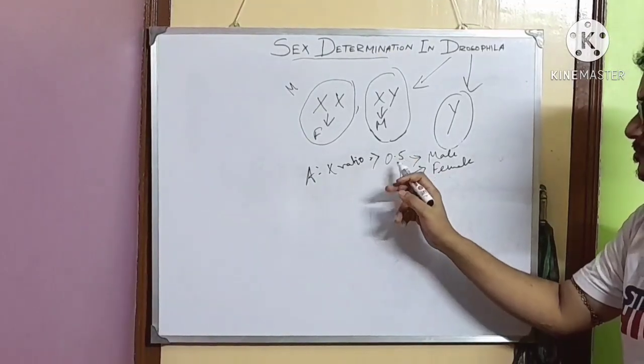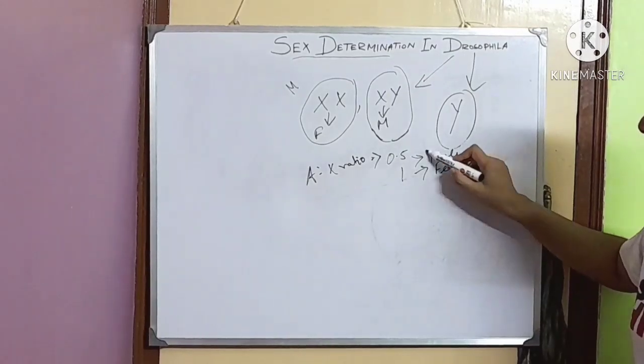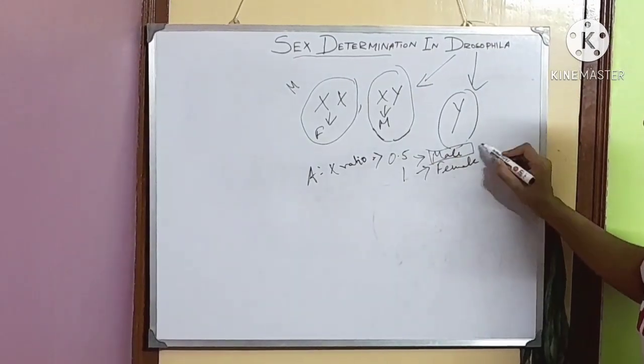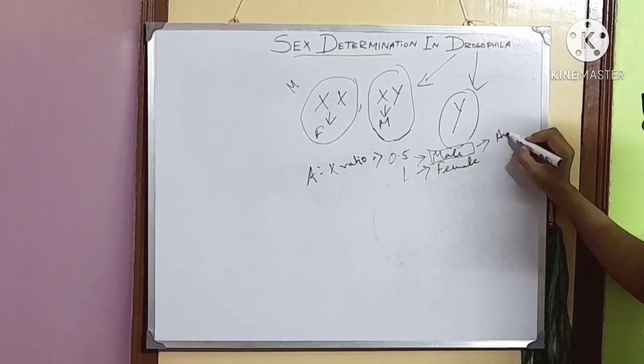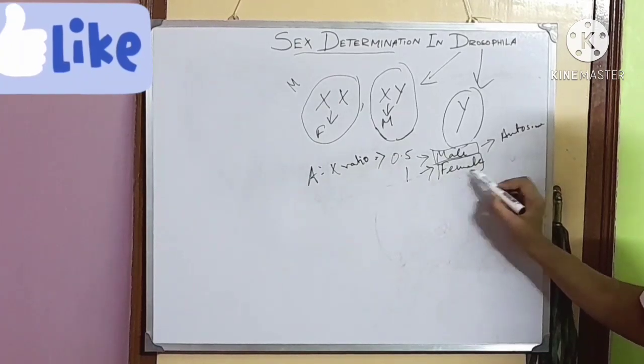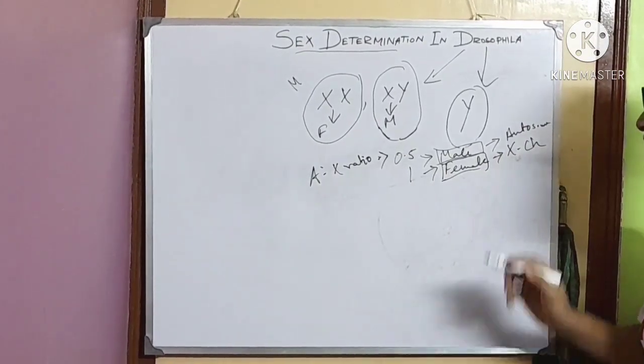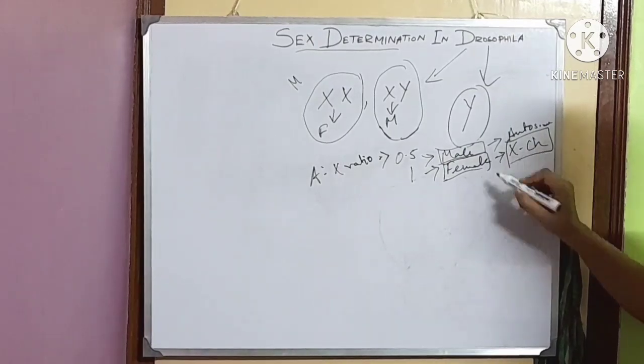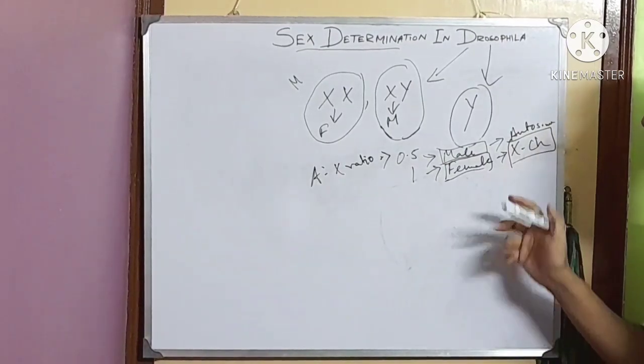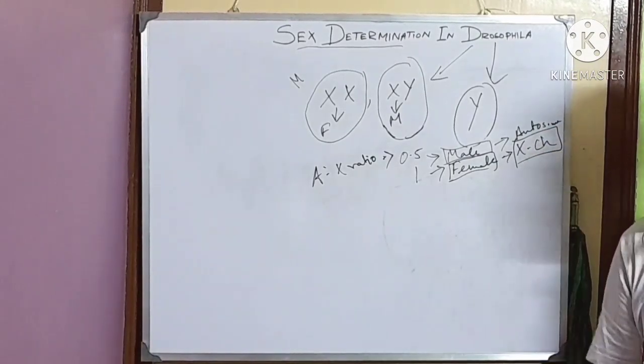Secondly, the factor that causes the fly to become male is present in the autosomes. This X chromosome contains certain genes that are causing this embryo to become female.